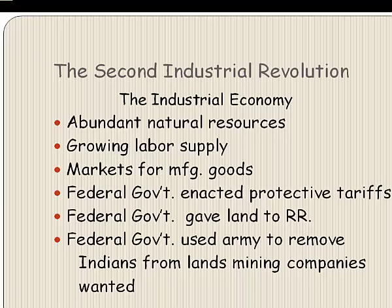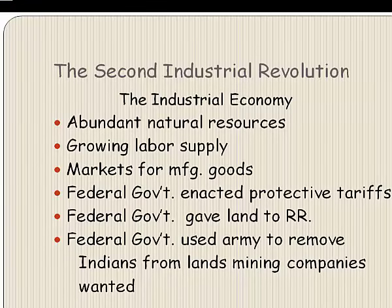The federal government also spurred industrial and agricultural development by enacting tariffs to protect U.S. industry from foreign competition, giving land to railroads, and using the army to remove Indians from western lands wanted by farmers and mining companies.